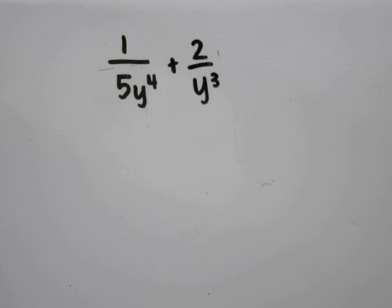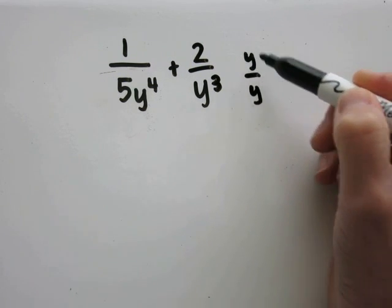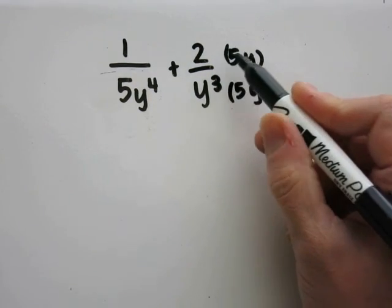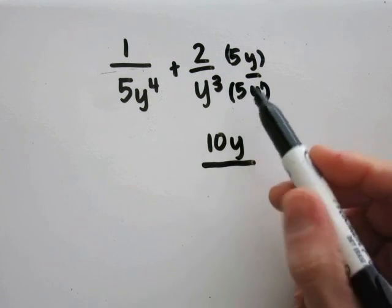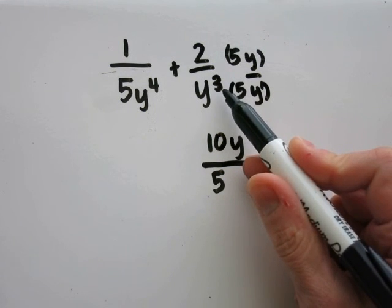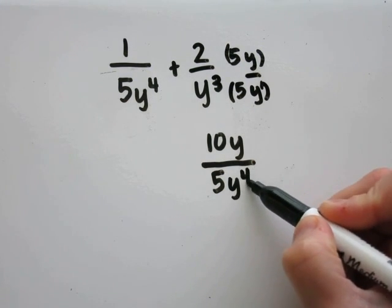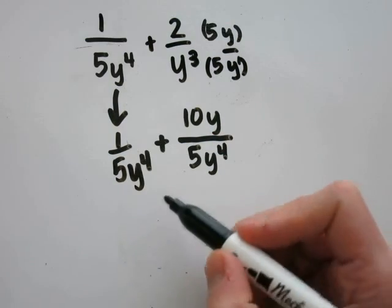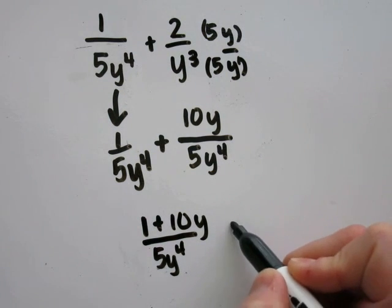Problem 20: 1 over 5y to the fourth power plus 2 over y cubed. Since I'm adding fractions, I'm going to need a common denominator. I'll need y to the fourth power, so I'll have to multiply y over y on the second fraction. I'll also need a 5, so I'll multiply 5y over 5y on that side. 2 times 5y is 10y. y to the 3rd power times y to the 1st power — same base, add the exponents, 3 plus 1 is 4 — so the denominator is y to the 4th. This can be rewritten, and this is the same as letter A.